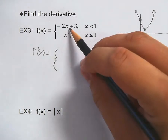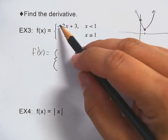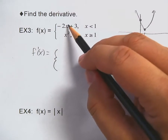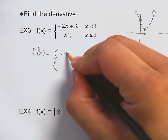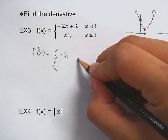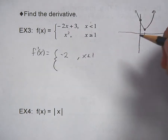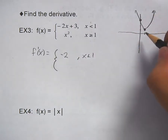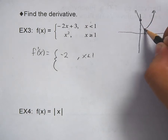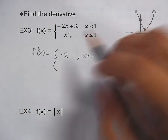The derivative of the first piece: bring down the one, so it's negative two x to the zero, which means the x to the zero goes away — it's negative two. The derivative of three is zero. That's when x is less than one. And isn't that the case? The slope of the line when x is less than one is negative two — down two over one. Fantastic.